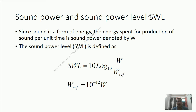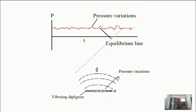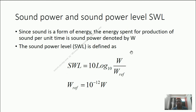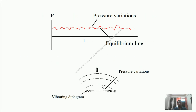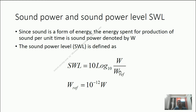Next term is sound power level. We know that whenever sound is created, energy is applied, because sound is also a form of energy. Some form of energy converts into sound energy — this is how sound is developed. Whatever energy is utilized per unit time for development of the sound is called sound power. The sound power level is noted by SWL. SWL equals to 10 log base 10 of W divided by W-reference, where W is the sound power in watts. The reference sound power W-ref is always taken as 10 to the power minus 12 watts. So whatever the power associated with the sound divided by the reference power, with 10 log base 10 — this is called sound power level.